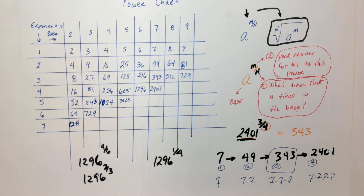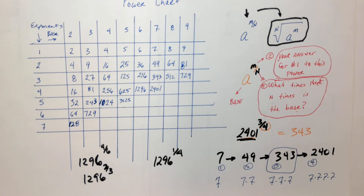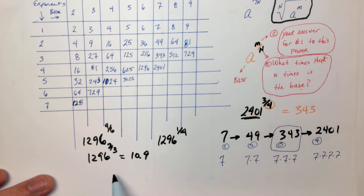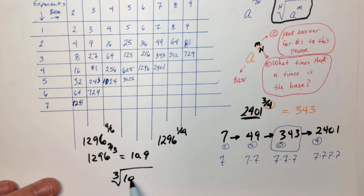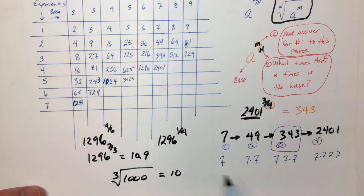I don't have my trusty calculator with me, but I can figure it out on the computer. 1296 to the 2/3 power — that's about 10.9. Which makes sense, because what's the cube root of 1000? What times itself 3 times equals 1000? Well, that would be 10. This is a little bit more than 10, so it kind of makes sense that that would be a good approximation.